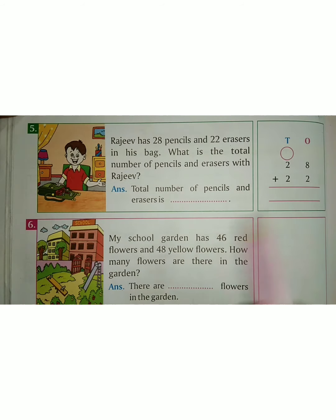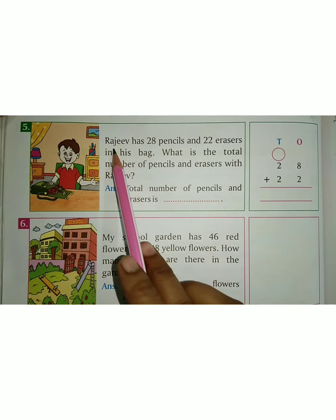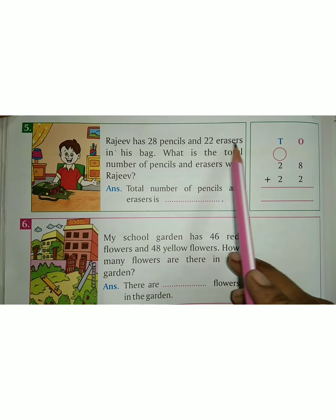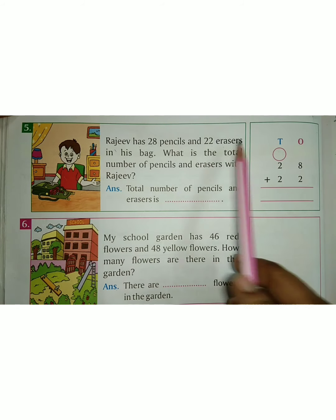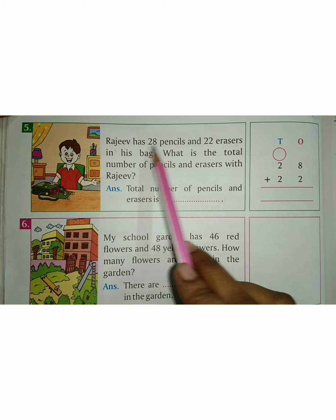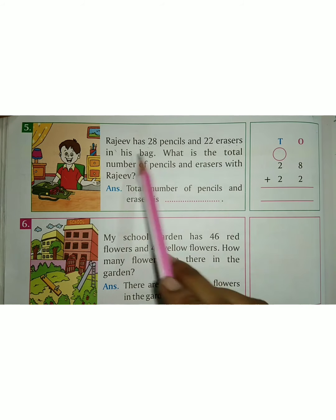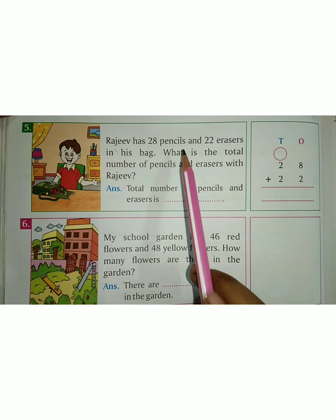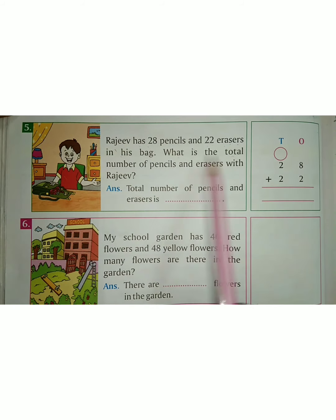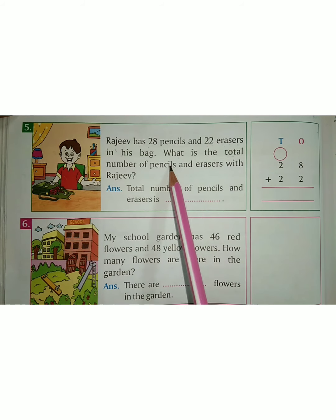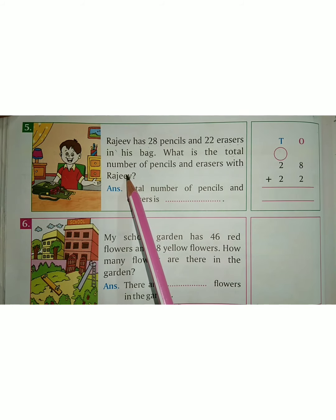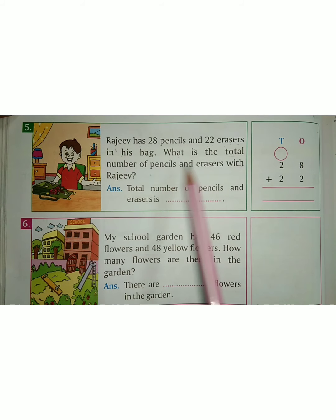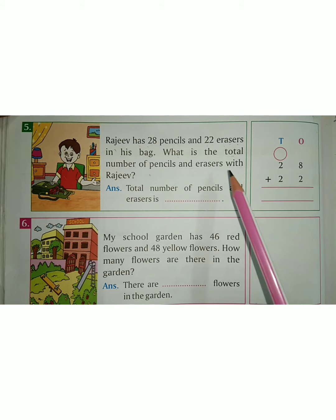Next question: Rahul has 28 pencils and 22 erasers. Rahul ke paas 28 pencils hai and 22 erasers hai in his bag. What is the total number of pencils and erasers with Rahul? Rahul ke paas total pencils or erasers kitne hain?